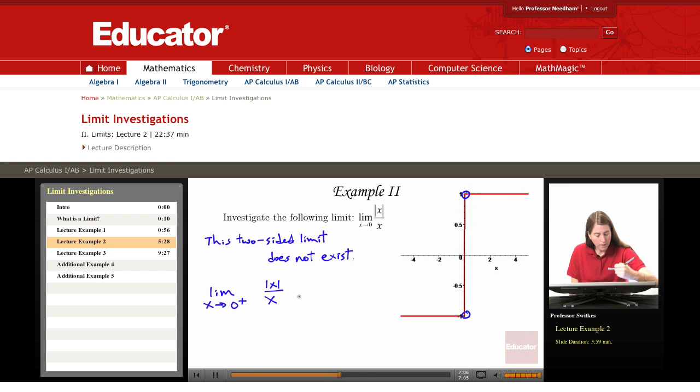And this limit looks at what happens as x simply approaches 0 from the right. And you can see that from the right, f of x is consistently at value 1, and as x heads towards 0, f of x simply stays at value 1.